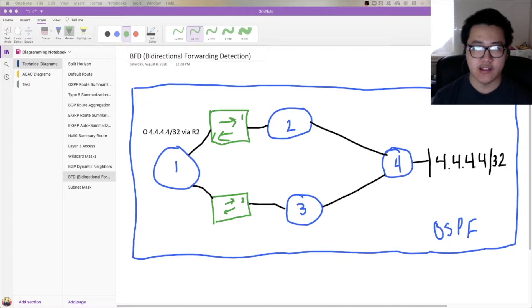So let's go ahead and look at this topology here, as I said we would. So as you can see here, we have four routers and two switches here. And router four is advertising a loopback of 444-32 into OSPF, which is our routing protocol of choice here.